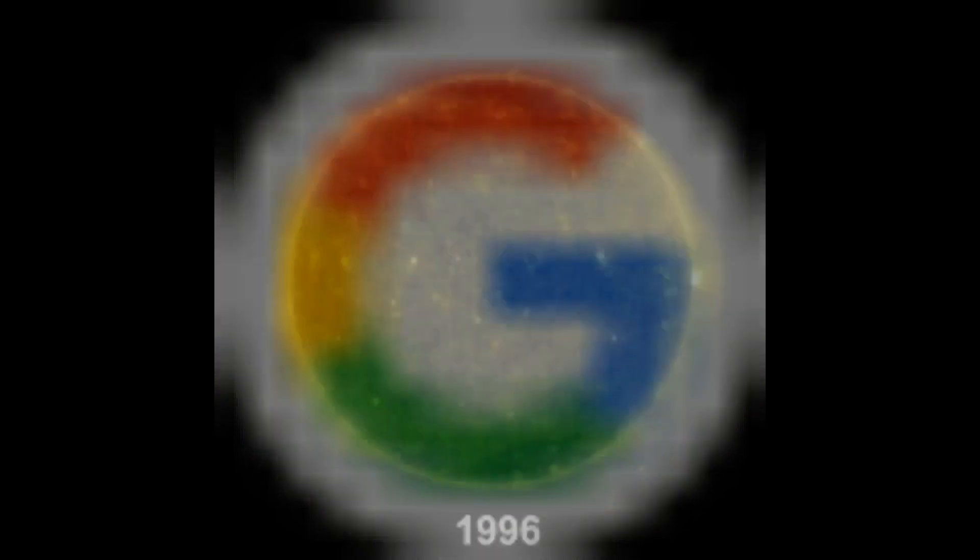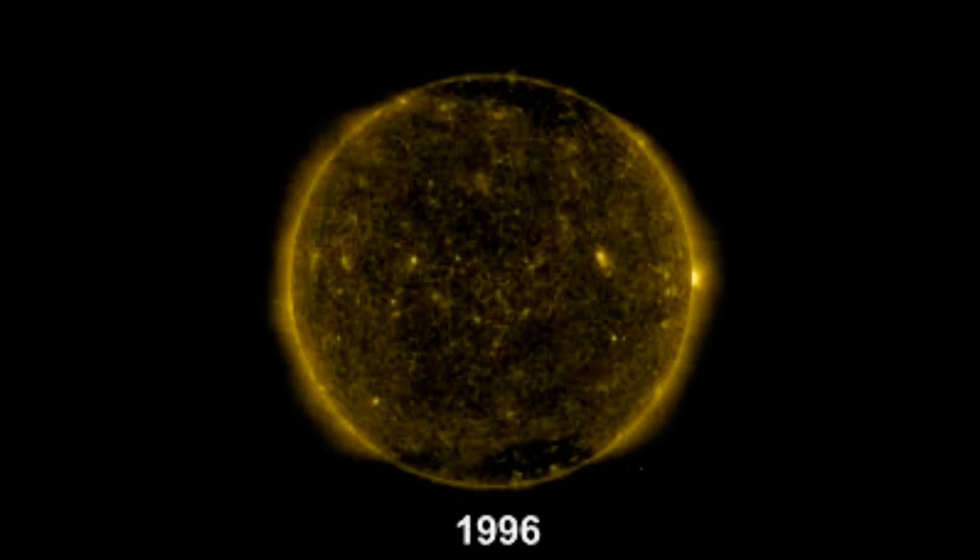One of the latest solar flares caused a brief radio blackout over the Atlantic Ocean when it struck Earth at 14:42 Greenwich Mean Time, 9:42 Eastern Time yesterday, Wednesday, according to spaceweather.com.